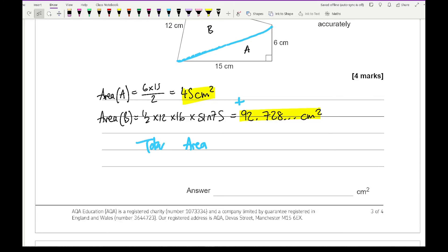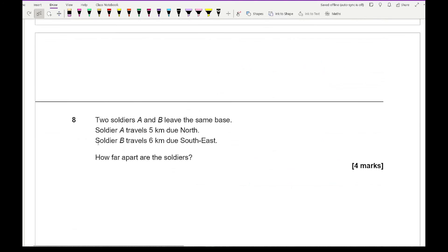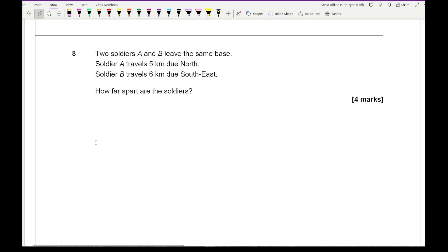That's right. So the total area is going to equal 137.7288793. So rounding this number up I get 137.7 and that's to one decimal place. Then moving on to question 8. It says that two soldiers A and B leave the same base. Soldier A travels 5 kilometres due north and soldier B travels 6 kilometres due south east. How far apart are the soldiers? Now for this one we need to draw a diagram.